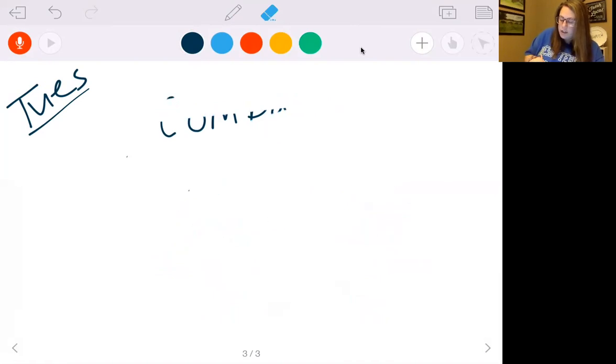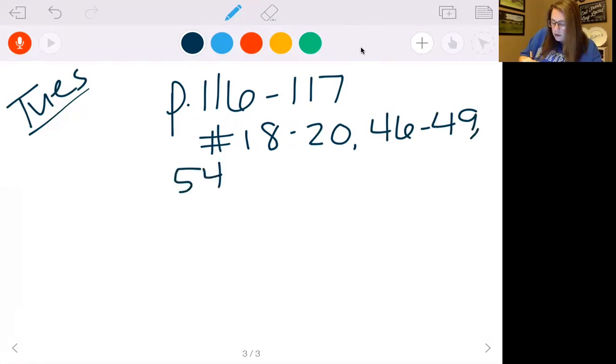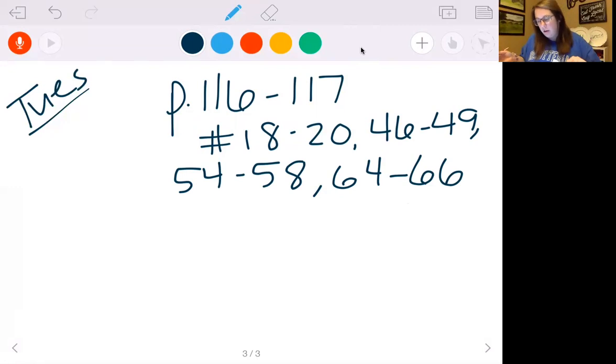So let's look at what you're going to be doing today. Today we're going to review for your test. You're going to do page 116 to 117 numbers 18 through 20, 46 to 49, 54 to 58, and 64 to 66. Let me walk you through these and let's do the first one of each set together and then I'm going to let you try that on your own.